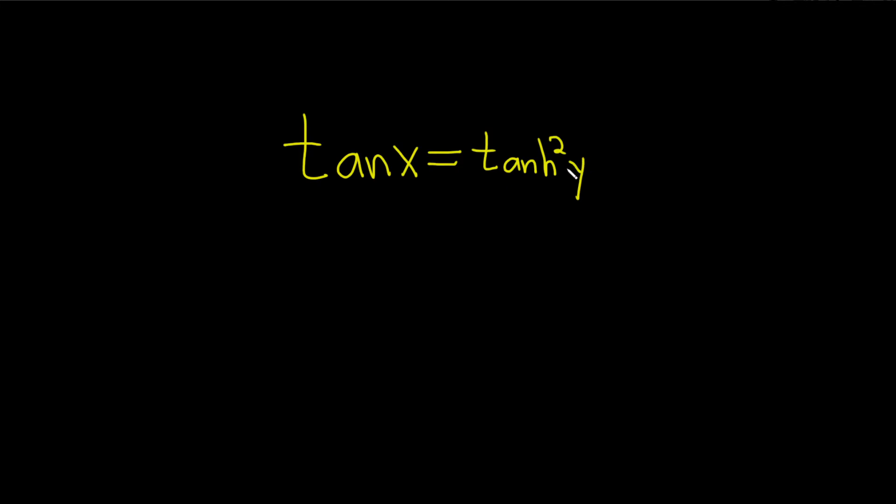Because we have a y here inside this hyperbolic tangent squared, we're going to use what's called implicit differentiation. So we'll take the derivative of the left-hand side.